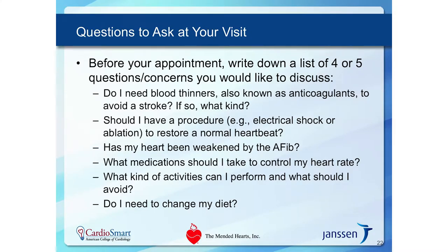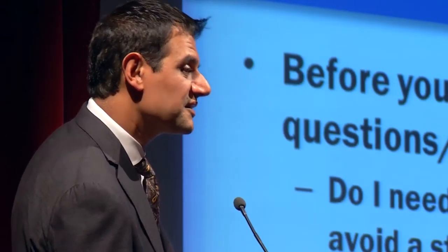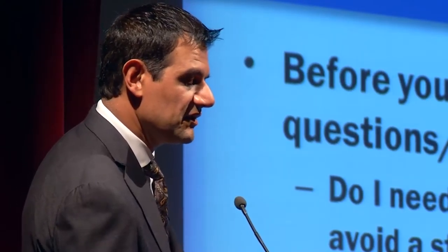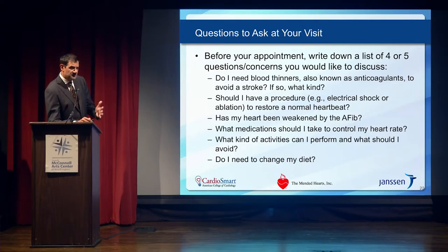Some key questions to ask your physician about atrial fib include: Do I need to be on a blood thinner to prevent a stroke, and if so, what type? Do I need any procedures to get my heart rhythm back to normal? Has the atrial fib weakened my heart in some way? What are the right medications to control the condition? What kind of activities can I perform, and are there any restrictions on exercise? And what can I do to prevent the condition — through diet, activity, weight loss, or better sleep habits?